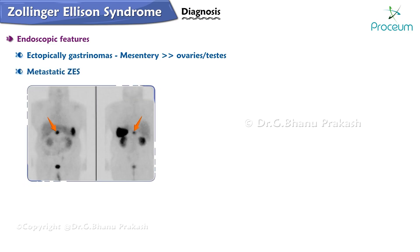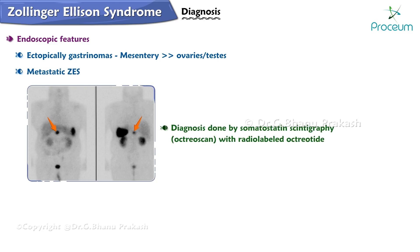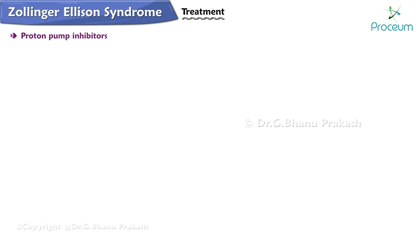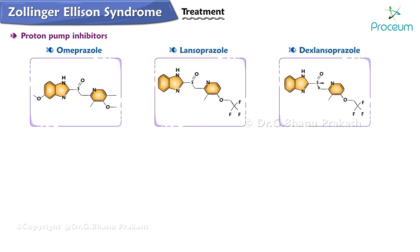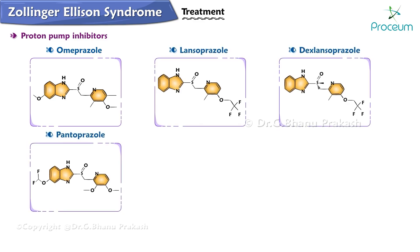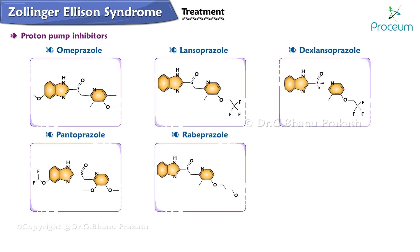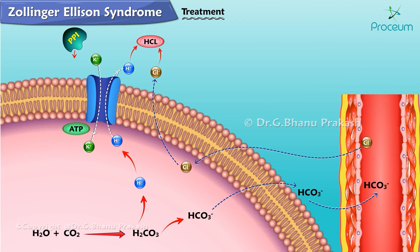In metastatic Zollinger-Ellison syndrome, diagnosis is done by somatostatin scintigraphy, also known as OctreoScan, with radiolabeled octreotide. Treatment with proton pump inhibitors — such as omeprazole, lansoprazole, dexlansoprazole, pantoprazole, rabeprazole, and esomeprazole — effectively blocks acid secretion by irreversibly binding to and inhibiting the hydrogen-potassium ATPase on the luminal surface of the parietal cell.